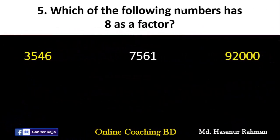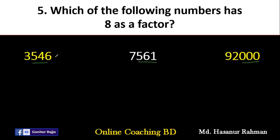Now number 5 says: which of the following numbers has 8 as a factor — 3546, 7561, and 92000? We know the rule of divisibility by 8: 8 is a factor of a number if the number formed by the last 3 digits has 8 as a factor. So we only need to check the last 3 digits. If the last 3 digits are divisible by 8, then the whole number is divisible by 8. Let's check 3546. Try to divide 546 by 8.